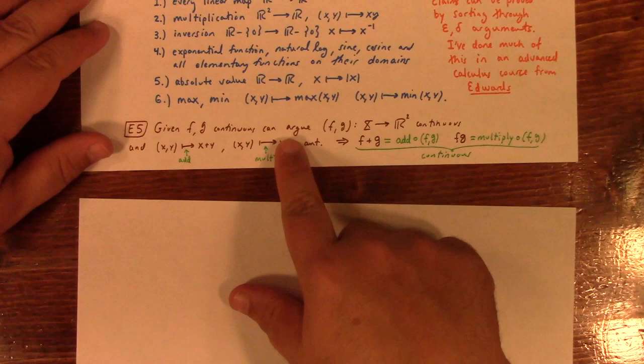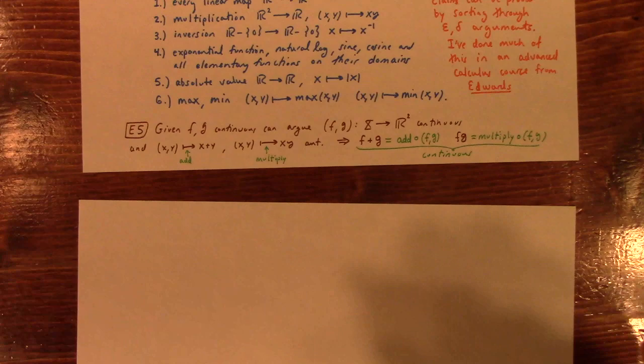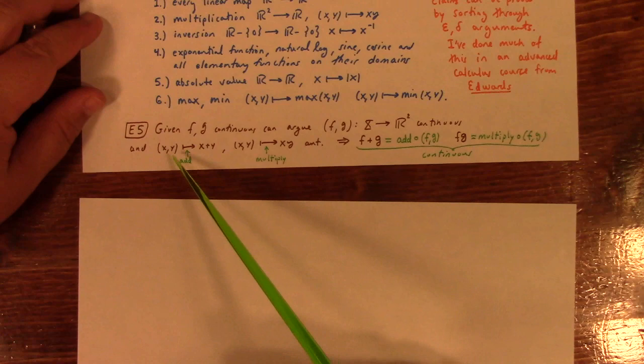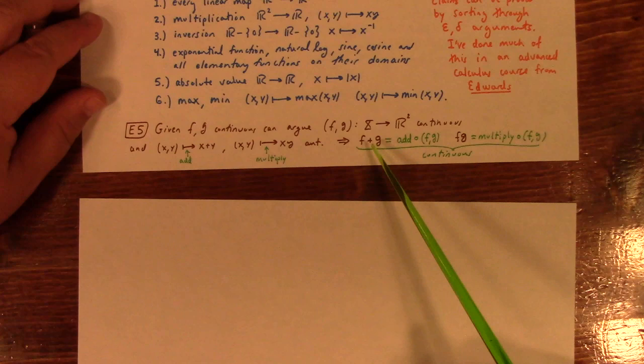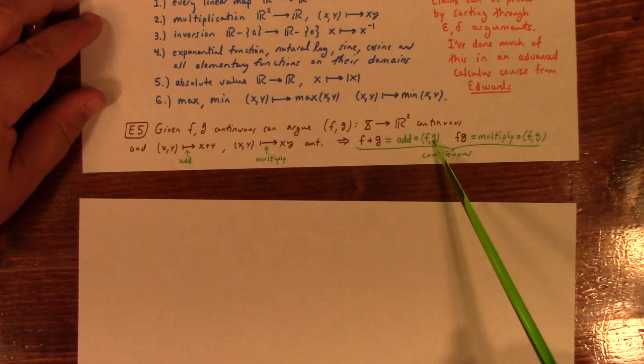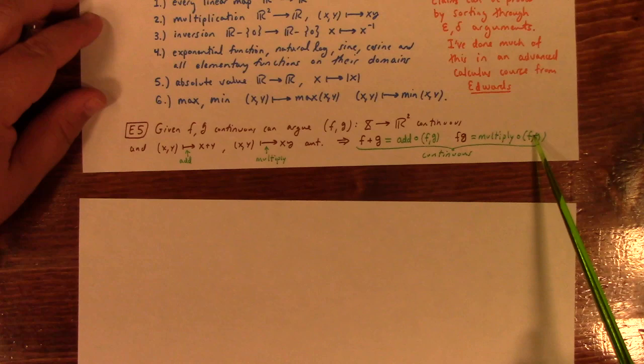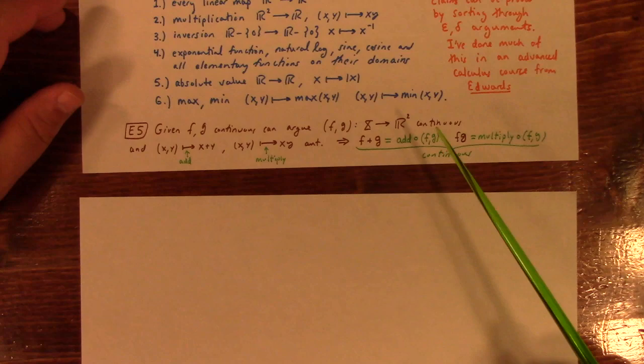If you have f and g continuous, then this is continuous because the component functions are f and g, and then we said the sum and the product map are continuous, I'm going to call that add and multiply. So f plus g is the composition of the add function and this f comma g function, both of which are continuous, composition of continuous functions being continuous, there we go. So then that thing is continuous, and likewise over here, multiply function is continuous, and this function is continuous, composition of continuous functions is once more continuous. So once you have these things to play with, you can prove continuity of pretty much anything.